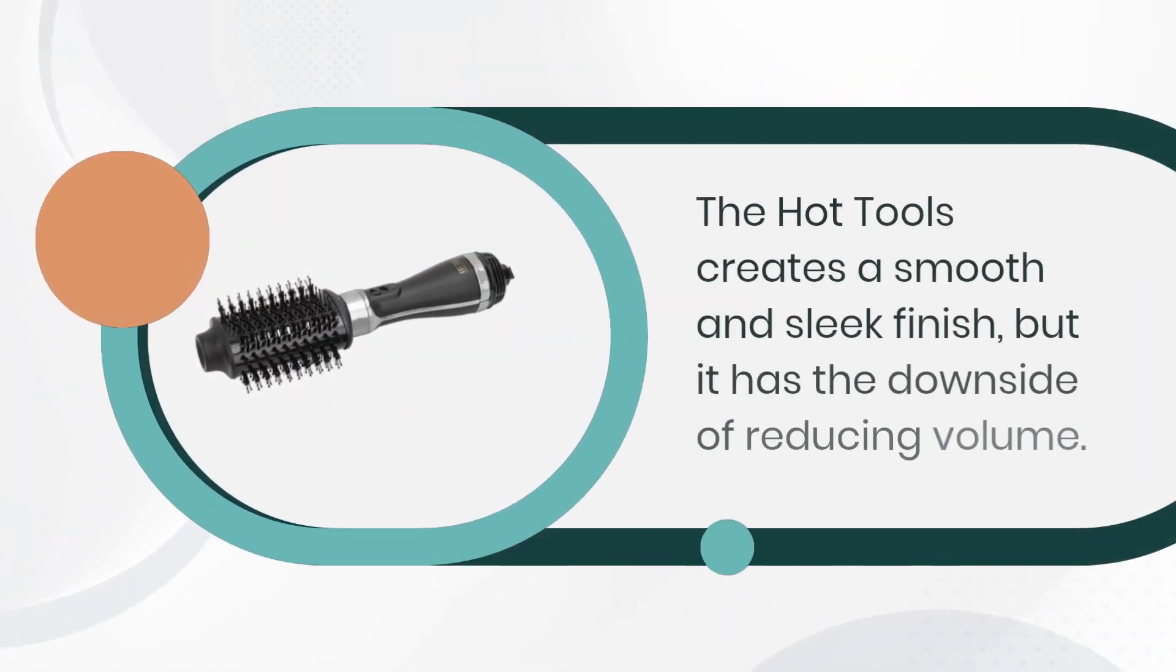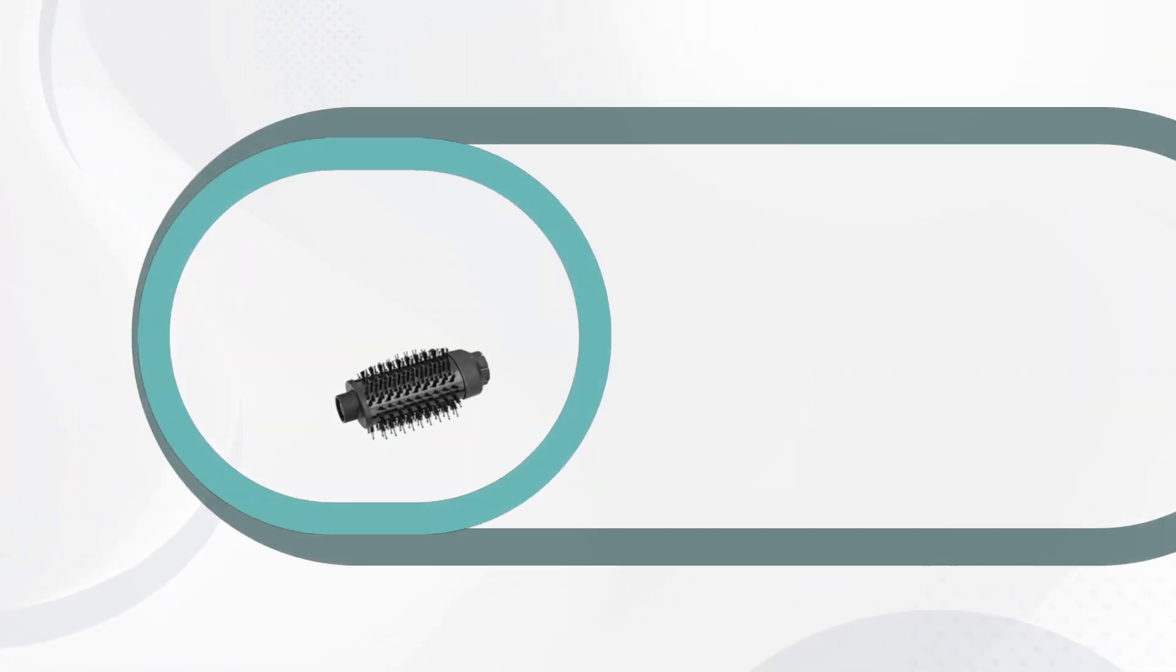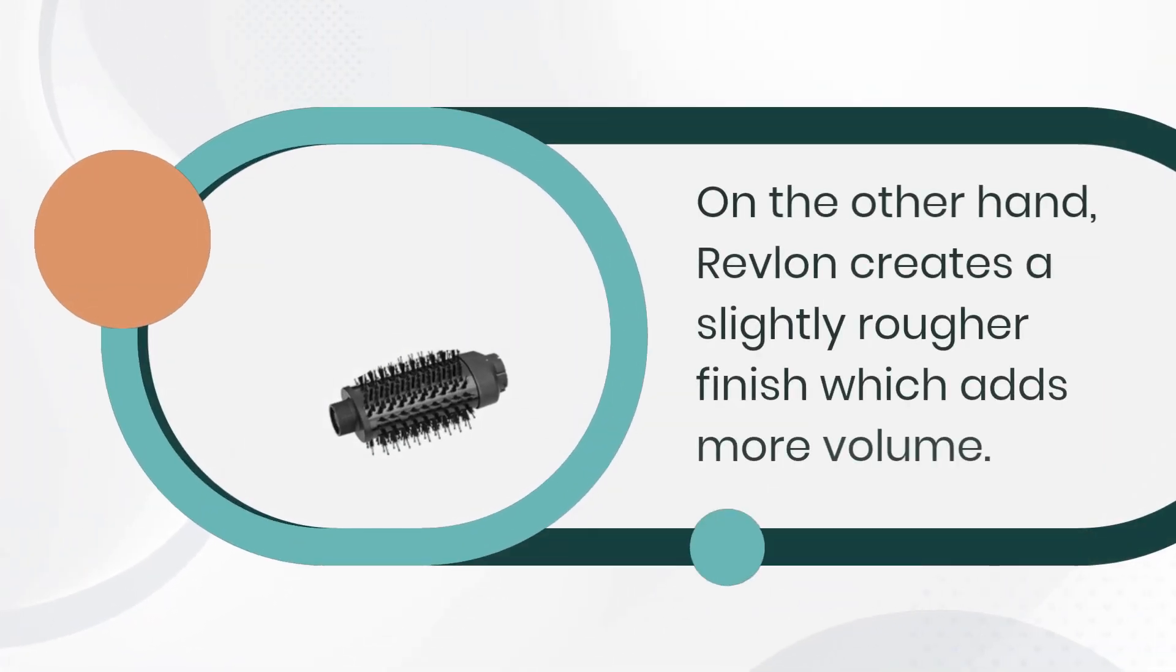The Hot Tools creates a smooth and sleek finish, but it has the downside of reducing volume. On the other hand, Revlon creates a slightly rougher finish which adds more volume.